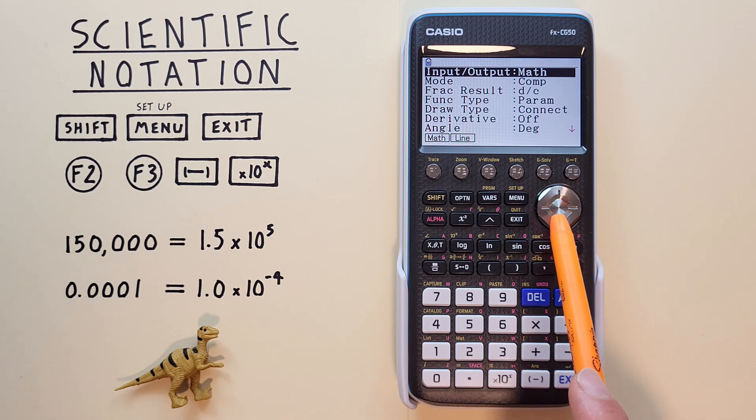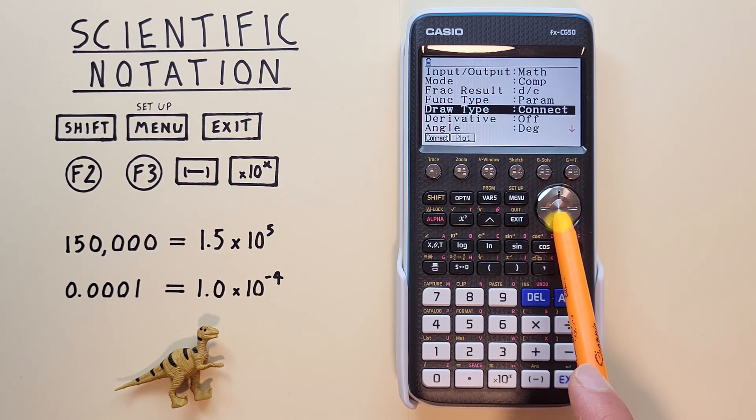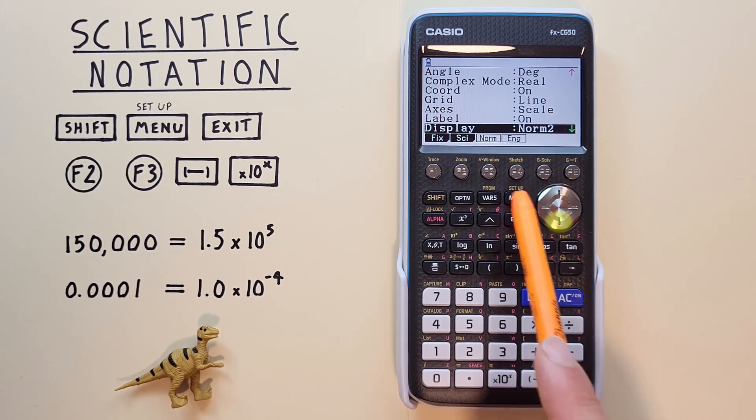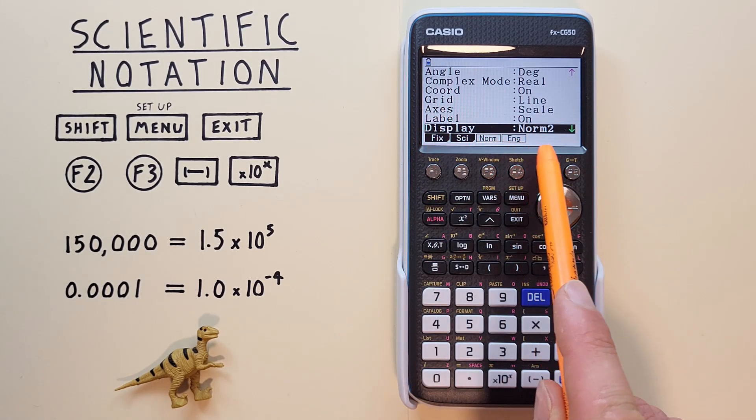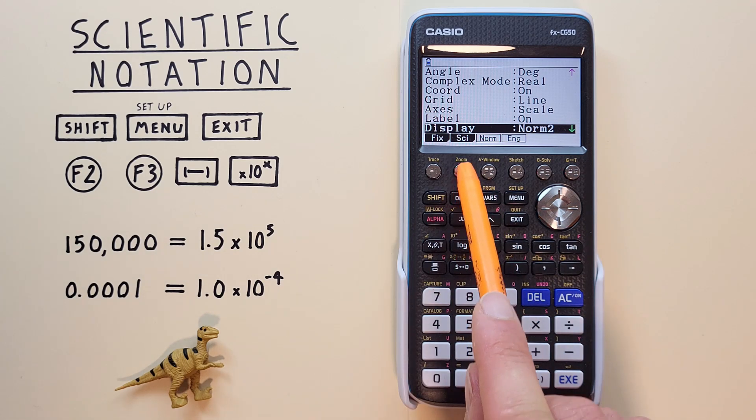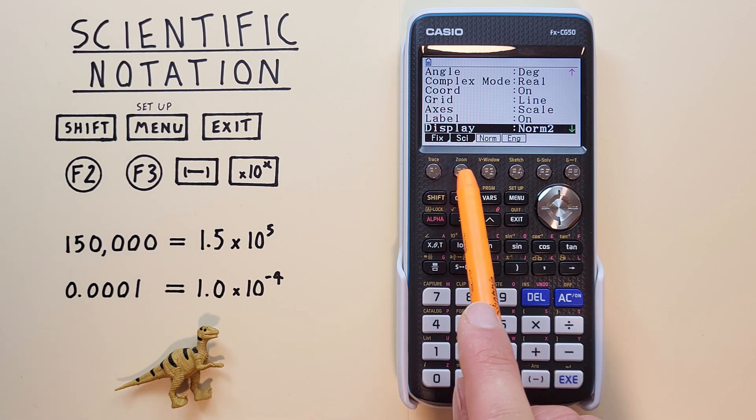Then scroll down until we see Display. Typically we're on Normal Mode 2. If we want to convert to scientific notation, we choose F2 SCI for Scientific Notation Mode.